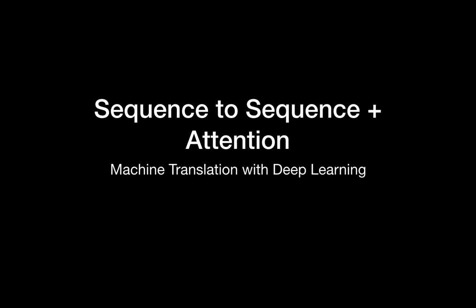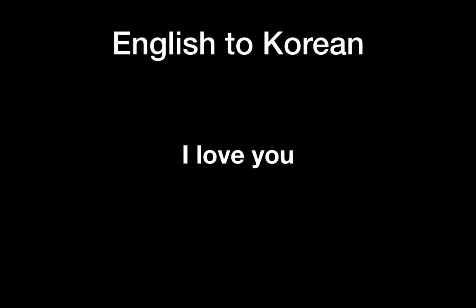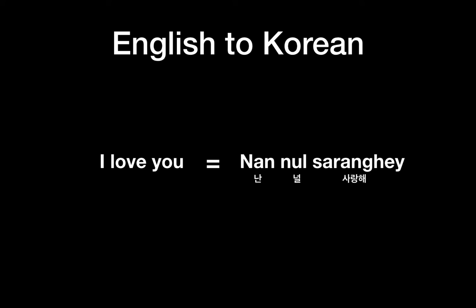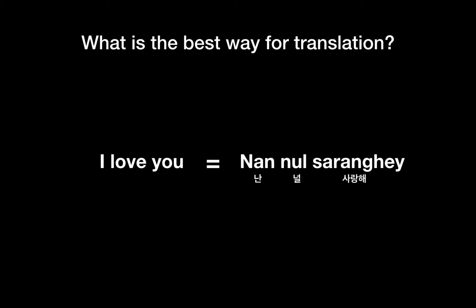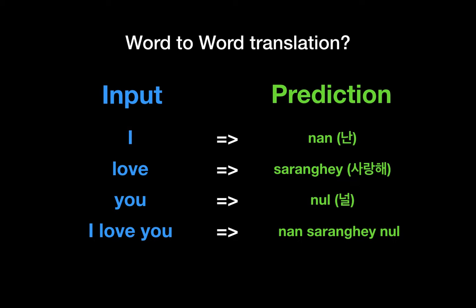Hello everyone. In this video we are going to learn about machine translation with deep learning, using sequence-to-sequence with the attention mechanism. Here is the example: we are going to translate English to Korean. The example sentence is 'I love you,' and 'I love you' in Korean is 'nan nul saranghae.' I use the English pronunciation here because many users don't know Korean.